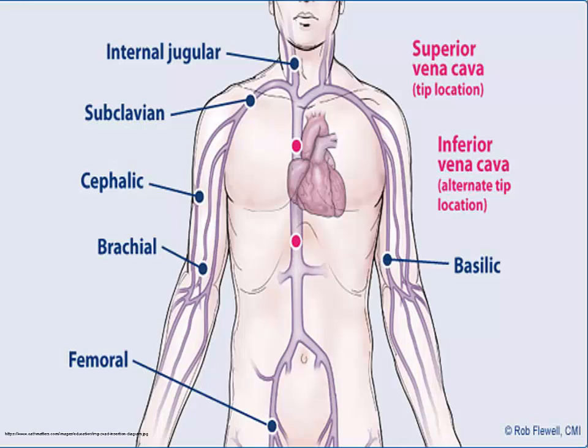There are three main types of central lines: centrally inserted catheters, peripherally inserted central catheters, and implanted ports. A physician can place any of these devices, but a nurse with specialized training can insert a PICC line, which is the peripherally inserted central catheter.